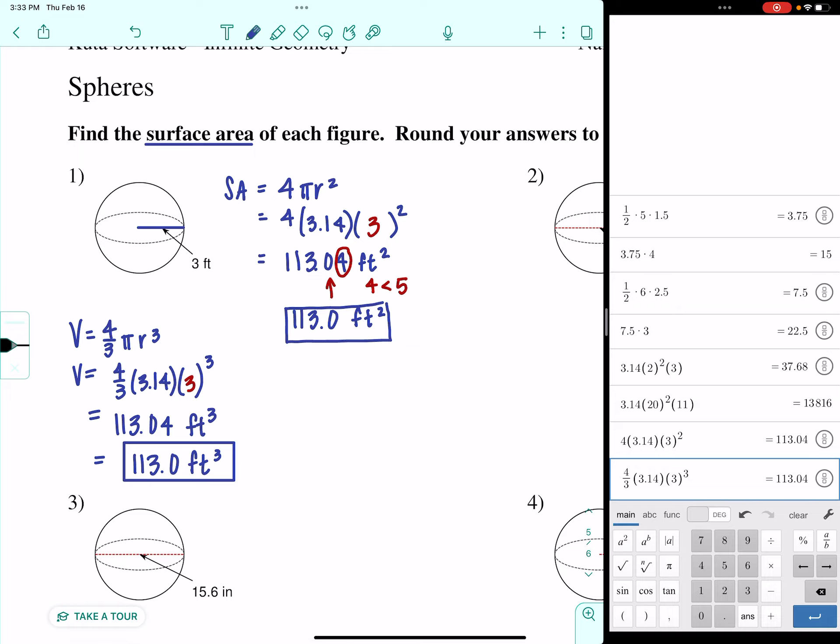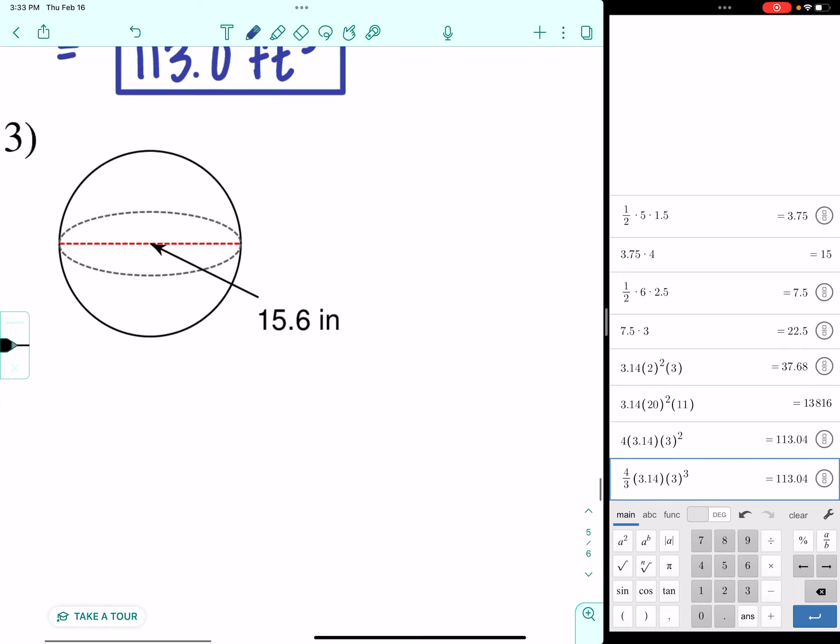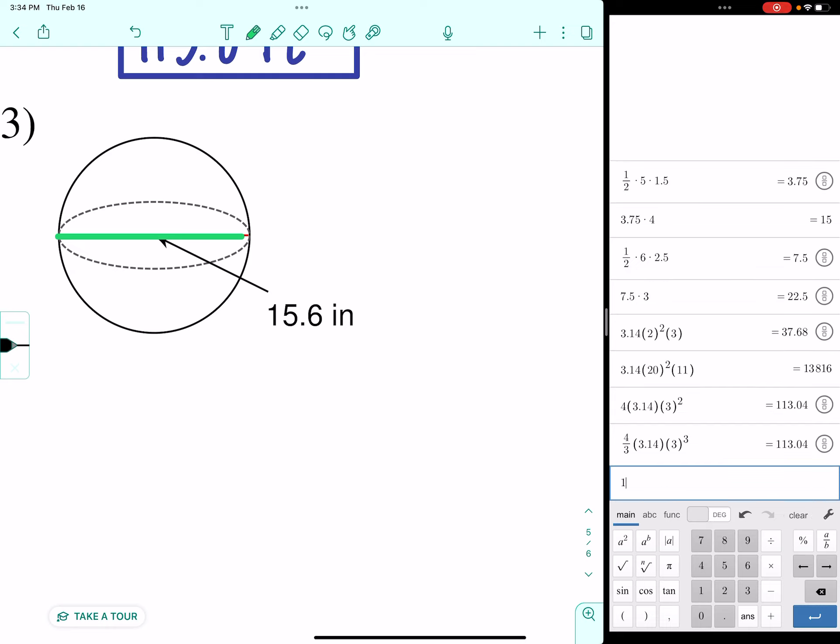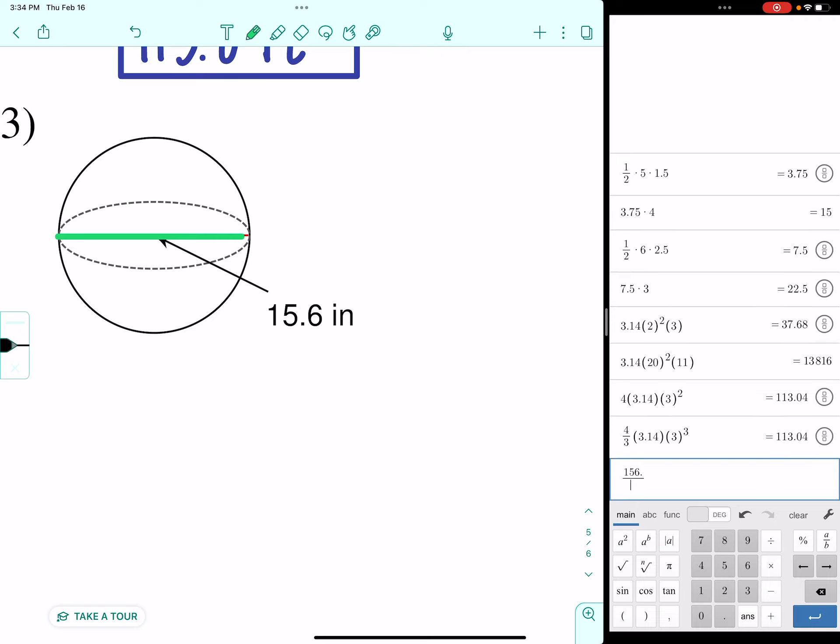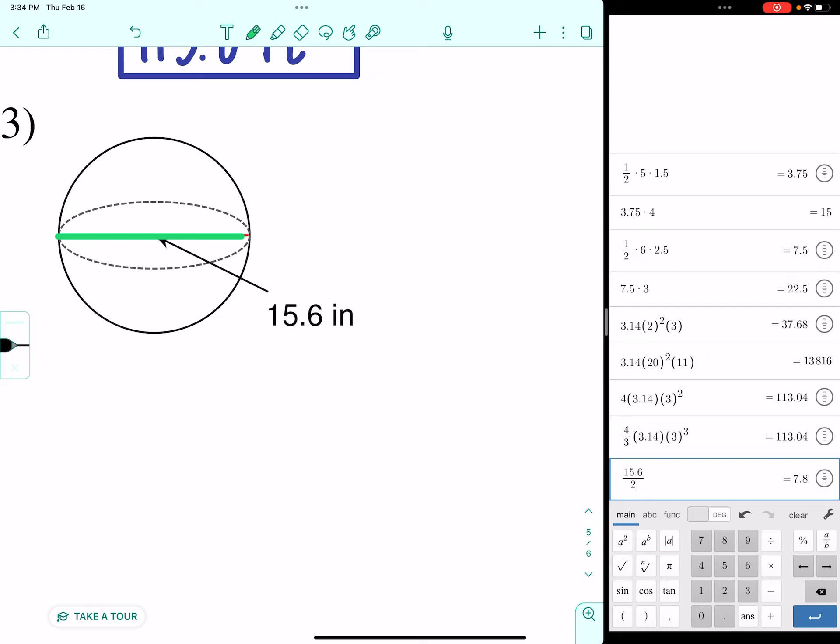These don't change a whole lot. We'll go do one more. We'll do one that has a diameter. We'll do this one instead of a radius. Just so you have an example of each kind to refer back to. This one tells me that diameter is 15.6. But I don't care about diameter. I need radius. So, 15.6 divided by 2. That means my radius is going to be 7.8 inches.